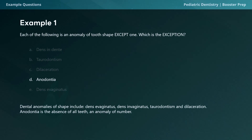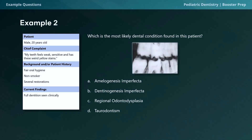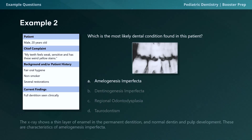The next question asks: which is the most likely dental condition found in this patient? A 20-year-old male whose chief complaint is that his teeth feel weak, sensitive, and have very weird yellow stains. He has fair oral hygiene, is a non-smoker, has several existing restorations, and we can see the full dentition clinically. Options: A) amelogenesis imperfecta, B) dentinogenesis imperfecta, C) regional odontodysplasia, D) taurodontism. The correct answer is A, amelogenesis imperfecta. The x-ray shows a thin layer of enamel in the permanent dentition with normal dentin and pulp development — characteristics of amelogenesis imperfecta.